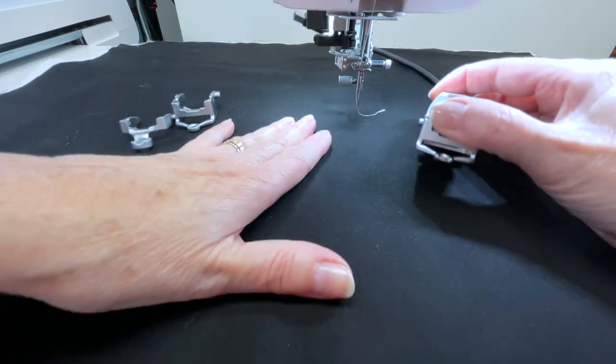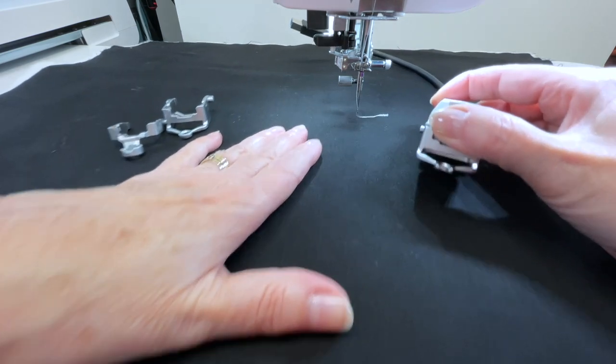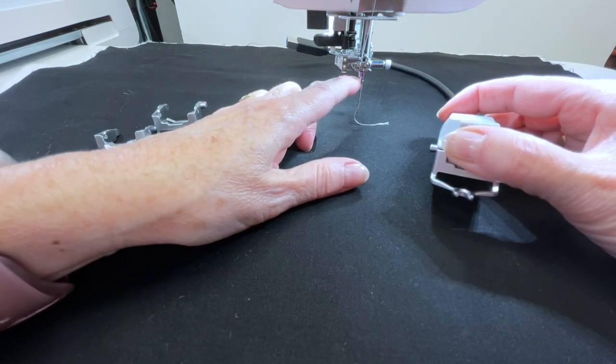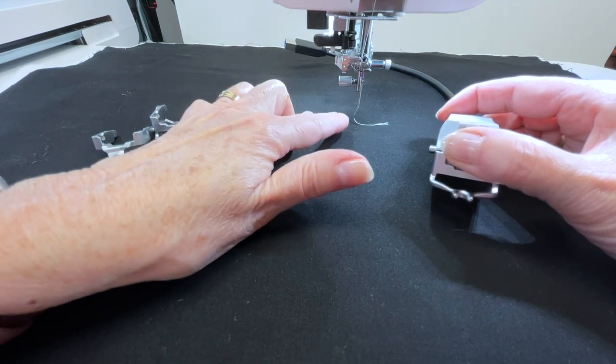So what that optical sensor is doing is it's reading how fast you're moving that fabric around under the needle, and then it'll adjust the speed of the needle—how fast the needle goes up and down—to give you the stitch length you have programmed into the CM17.